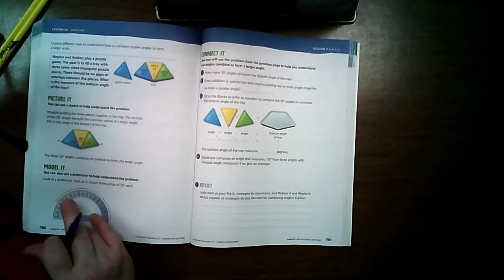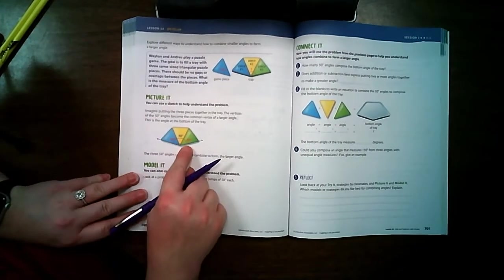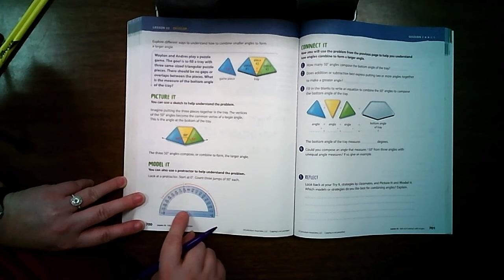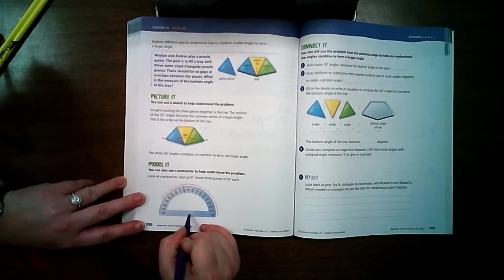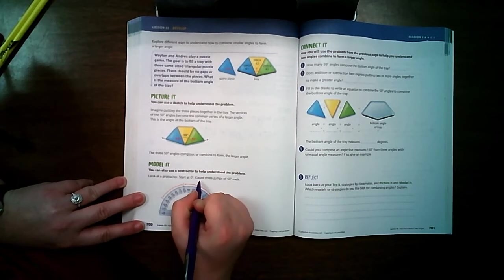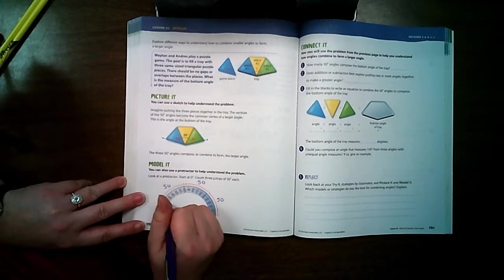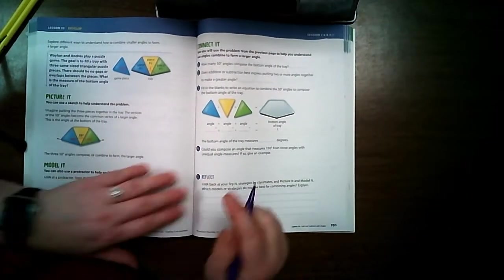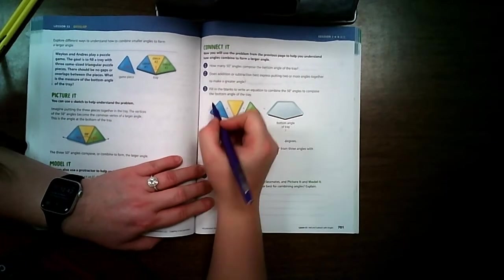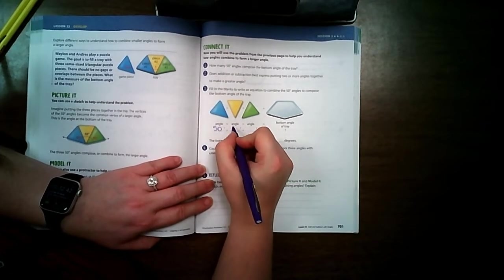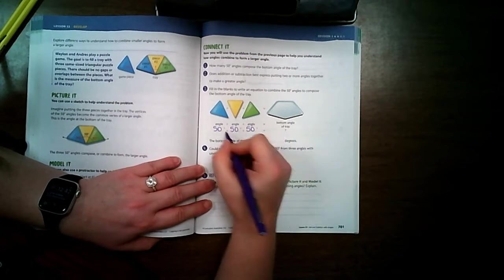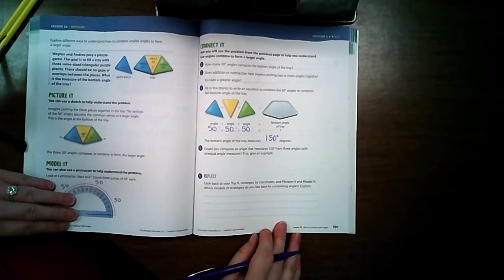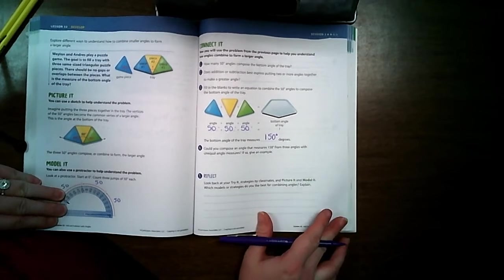Let's turn to page 700. Right here it shows an example where each piece is worth 50 degrees. And down here it's showing where you can use a protractor and if you jump 50, 50, and 50, you would still end up at 150 degrees. We're going to skip down here to number three. The blue piece we knew was worth 50 degrees and so was the yellow and so was the green. So if I add those together, this angle of the bottom of the tray is 150 degrees. That's all we're going to complete on page 701. Let's turn to page 702.